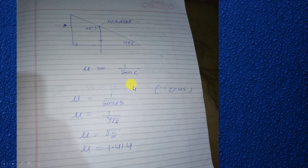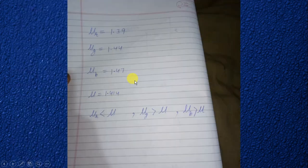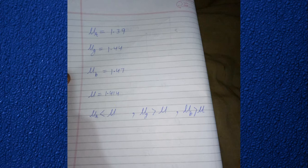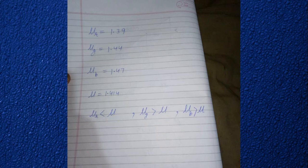Observing from this relation that refractive index is inversely proportional to the critical angle, we conclude that the refractive index for the red wavelength (1.39) is less than μ = 1.414. Therefore, the critical angle for red wavelength is greater than 45 degrees, meaning red wavelength does not fulfill the condition of TIR and it will be transmitted through surface AC.